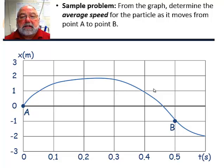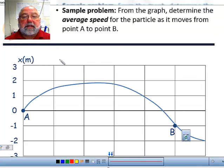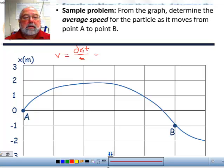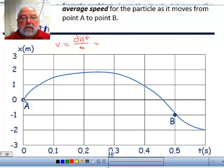From the graph, determine the average speed for the particle as it moves from point A to point B. So what we need to do is recall that speed is equal to distance over time. So we need to calculate or determine the distance. And we do that by figuring out how far we traveled. So from 0 seconds to this point here, let me scroll down a little bit so we can see the whole thing. From till right about here, we traveled about 1.9 meters.